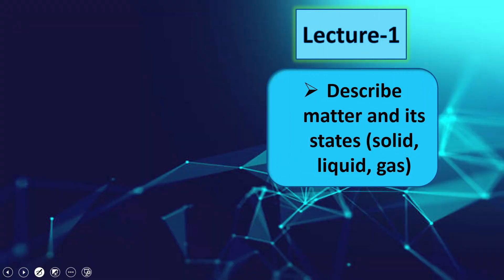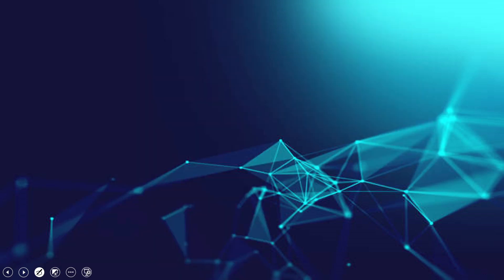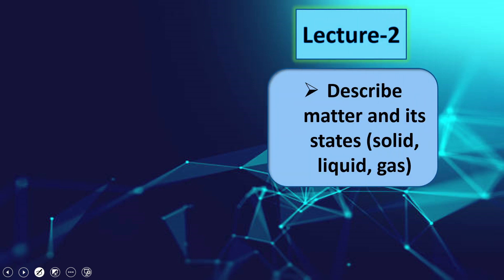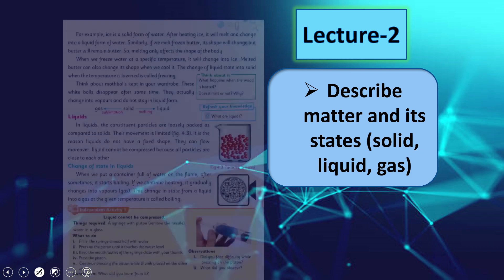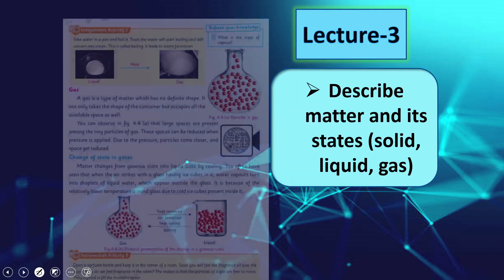In lecture number one, students will be able to describe matter and its states — solid, liquid, and gas. The reading page included is page number 52. Then in lecture number two, students will again be able to describe matter and its states — solid, liquid, and gas — and the page included is page number 53.